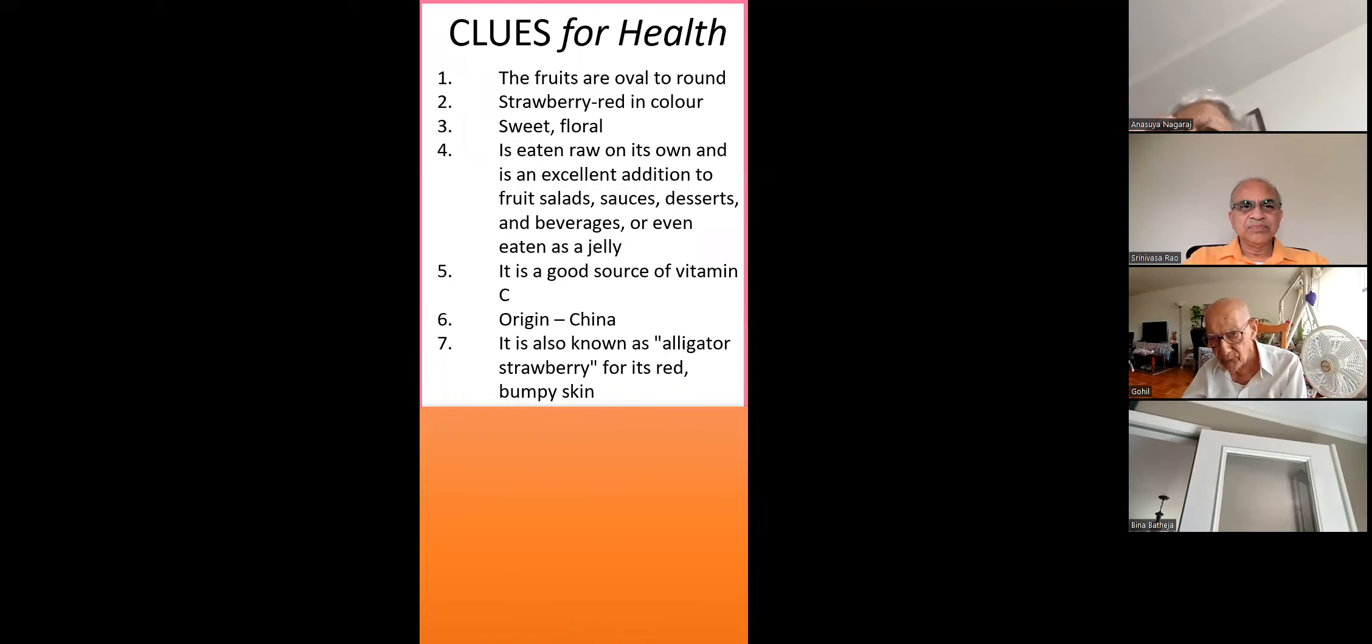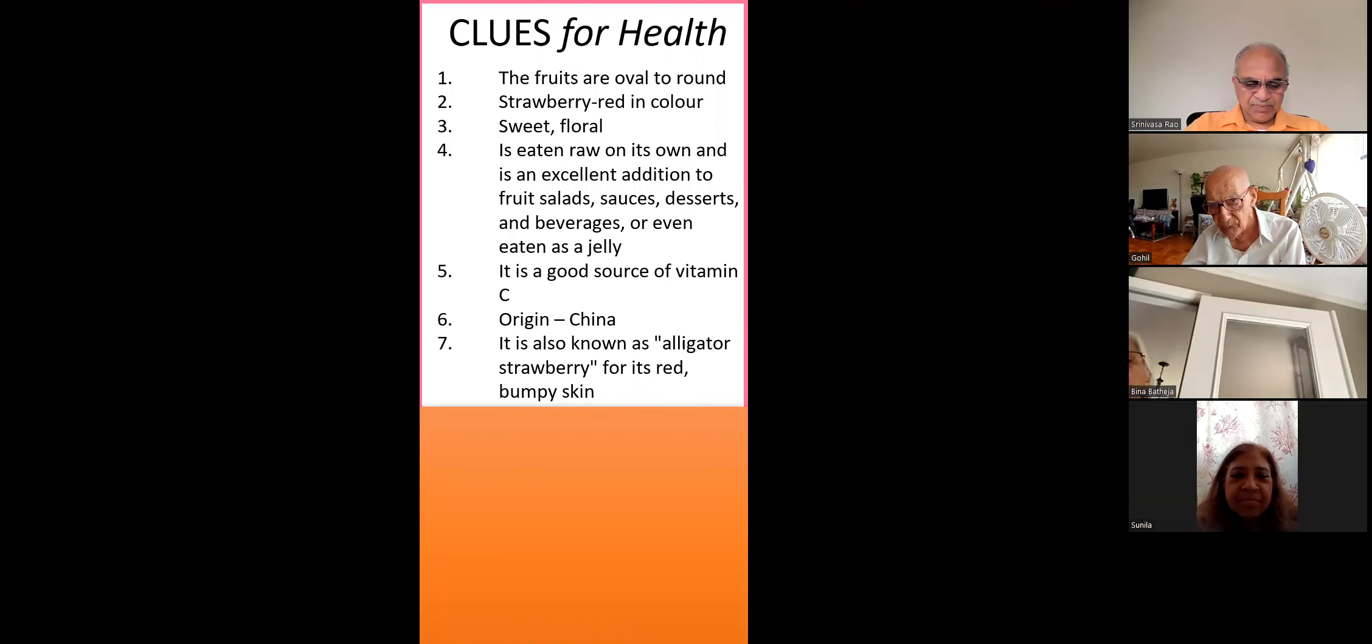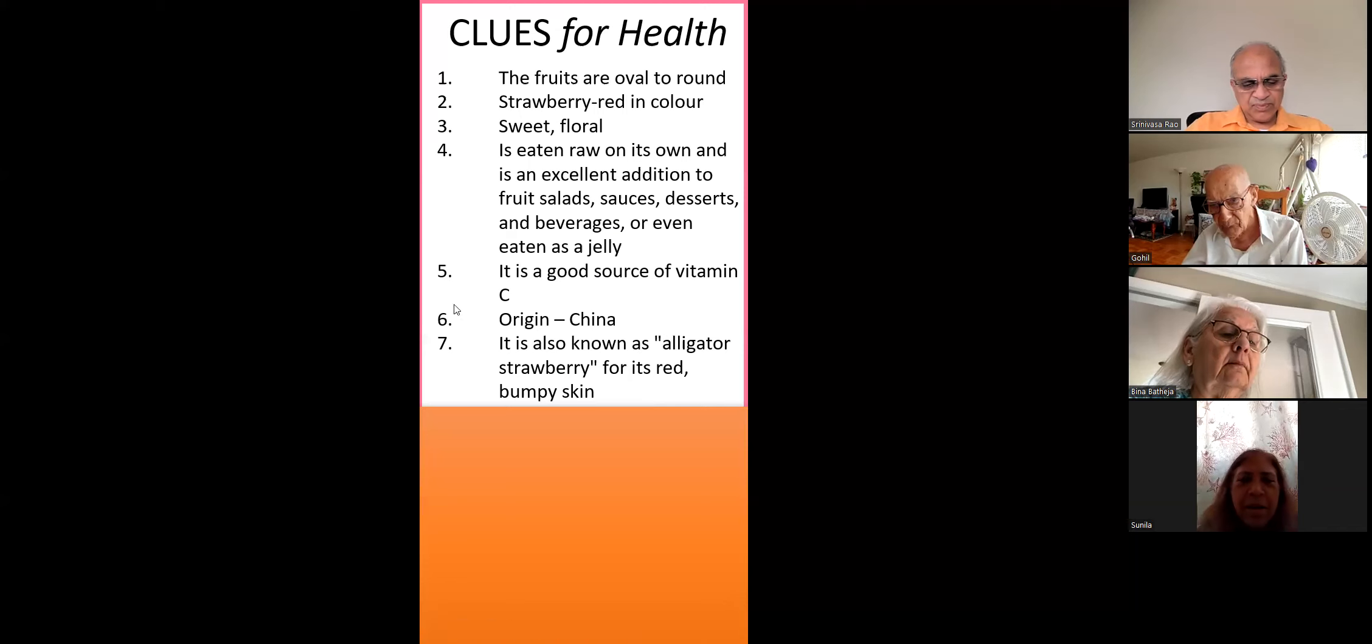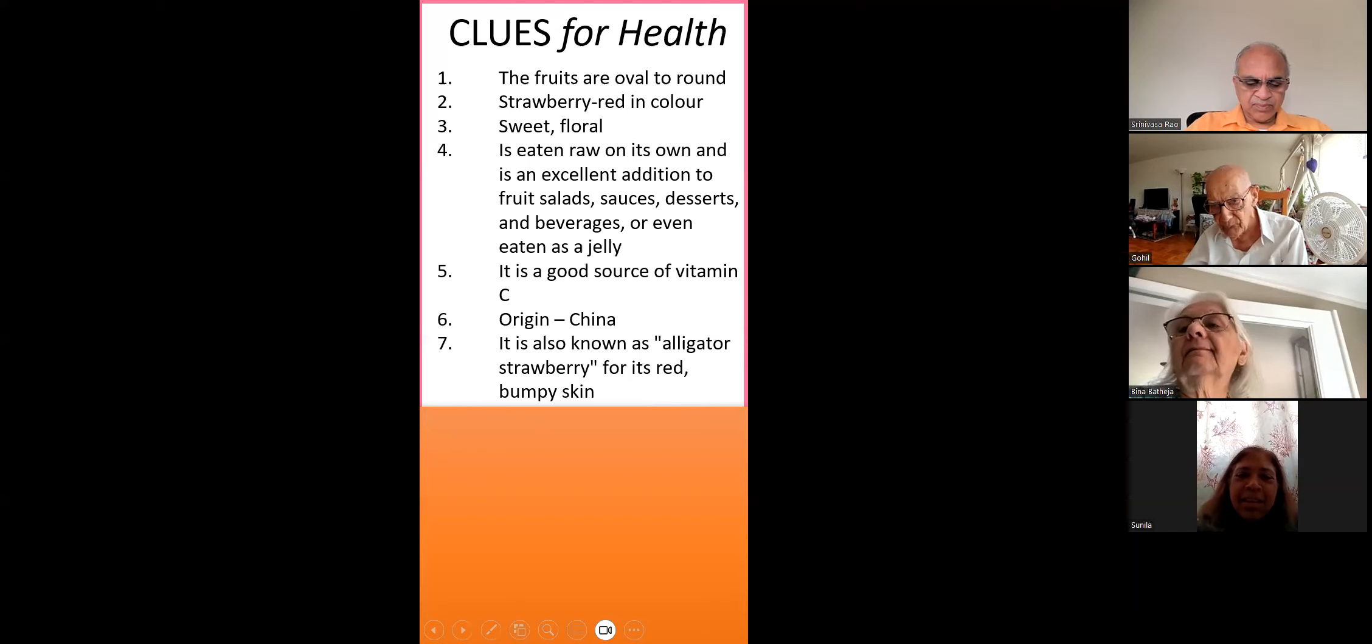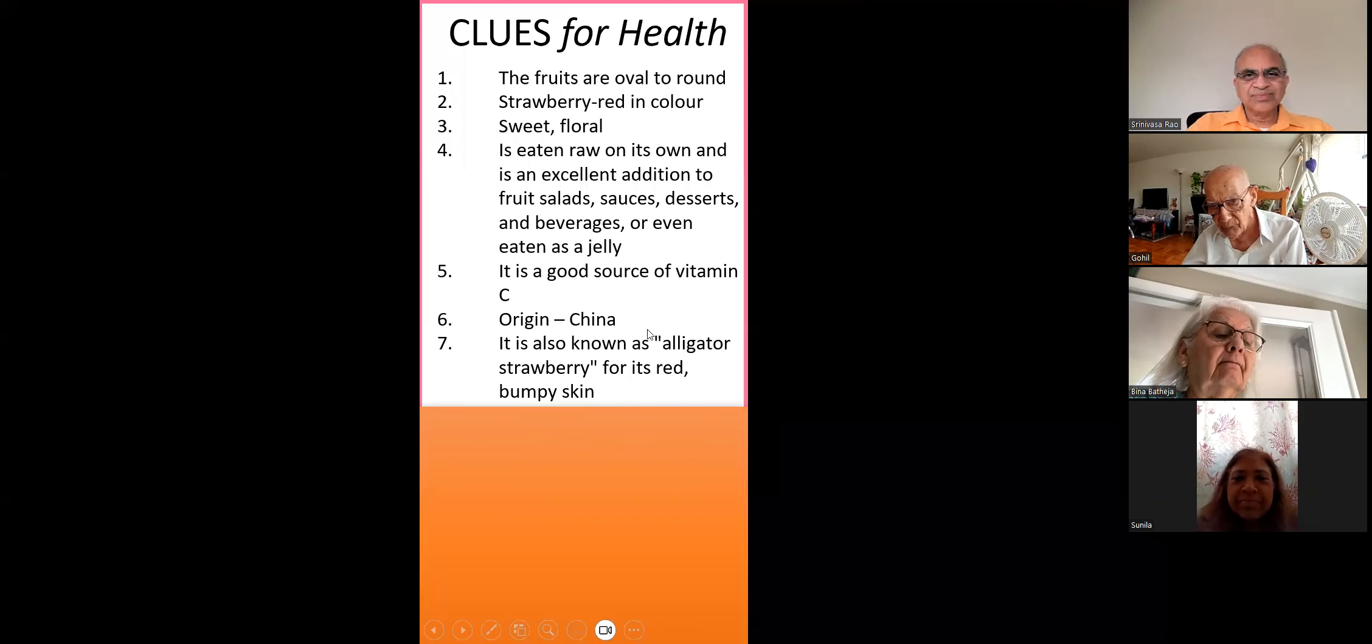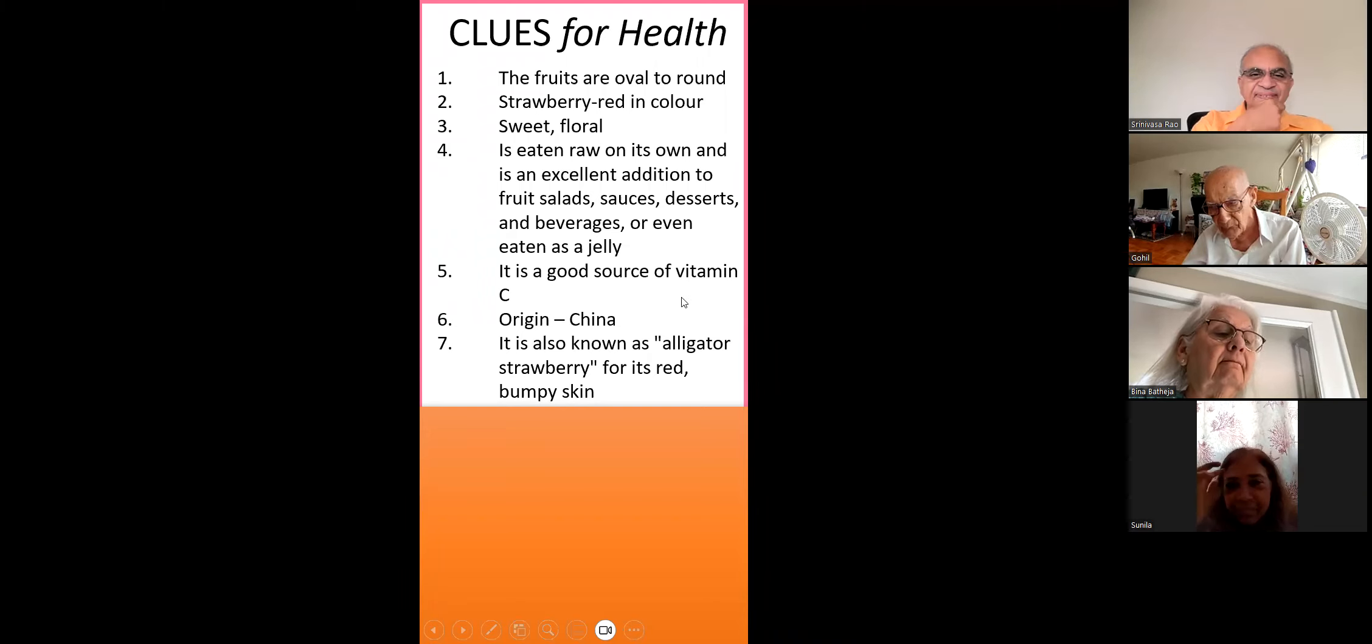Next one. These fruits are oval to round, strawberry red in color, sweet floral in taste. Is eaten raw on its own and is an excellent addition to fruit salads, sauces, desserts and beverages or even eaten as a jelly. Origin is China. It is also known as alligator strawberry for its red bumpy skin. Pomegranate? Lychee.